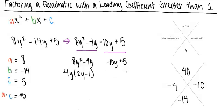Negative 10y and 5 have a greatest common factor of negative 5, so we can rewrite this as negative 5 times 2y minus 1.